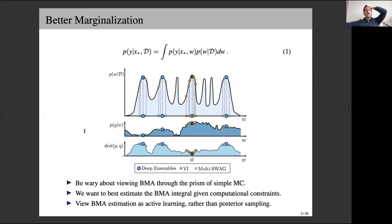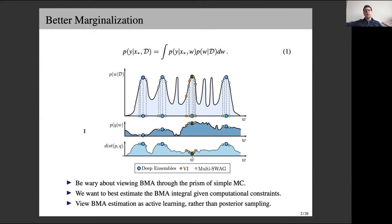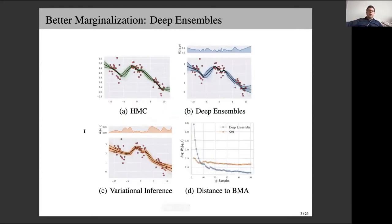A heuristic like deep ensembles helps get around the curse of dimensionality. My contention is that deep ensembles are doing better than a lot of approaches for approximate inference in deep learning. Part of this is because methods like mean field variational inference are well-studied in settings outside deep learning, and we uncritically apply them to deep neural networks where they may not make much sense — where we have these unusual topological properties in the posterior. The relevant question in empirical studies is how close is the predictive distribution to the Bayesian ideal.